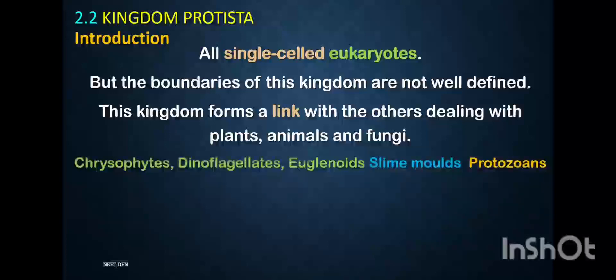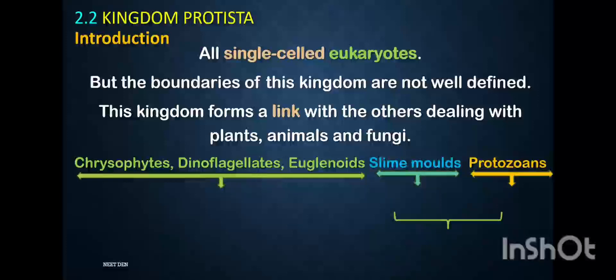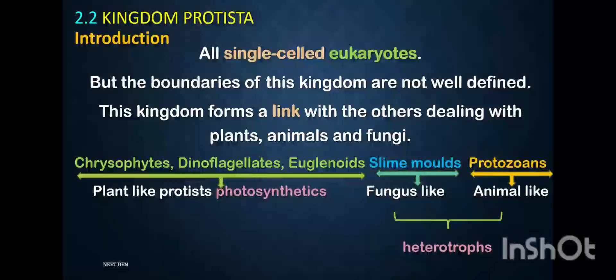Looking at the various types of protists: chrysophytes, dinoflagellates, and euglenoids are plant-like protists because they have pigments and are photosynthetic autotrophs. Slime molds and water molds are fungus-like protists and are heterotrophs. Protozoans are animal-like protists and are also heterotrophs. So Kingdom Protista can be divided into plant-like, fungus-like, and animal-like protists.